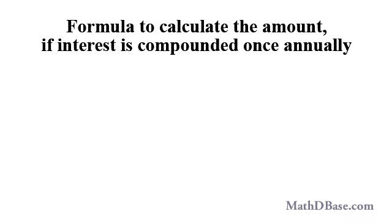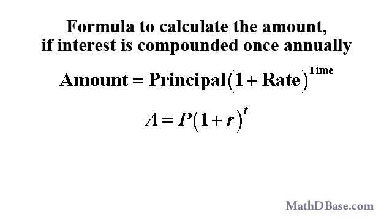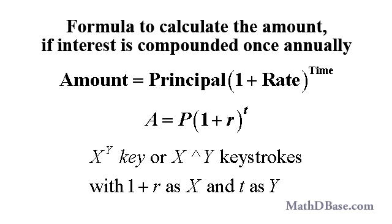The amount received using compound interest can be calculated using this formula, where R is the interest rate expressed as a decimal and T is the time in years. To calculate the part of the formula in parentheses, add 1 to the annual interest rate R, then either multiply the result by itself T times, or use the X to the Y key and Y keystrokes, putting the value of 1 plus the interest rate as X and the number of years as Y.